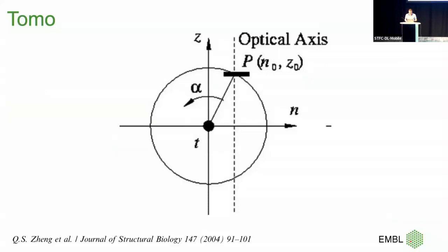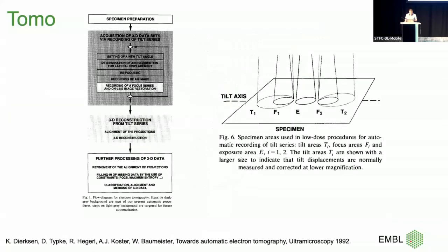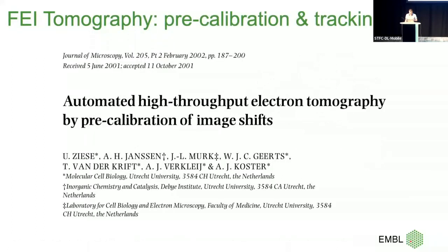The stage technology is about 30 years old. In the early days, you'd take an image somewhere, then along the tilt axis go next to it, do focusing, take a tracking image, take an image, tilt, and then do tracking and focusing again — very, very slow, but everybody accepted it. In 2000 I started at FEI, soon after FEI Tomography was launched, based on a method from Bram Koster's lab involving pre-calibration of image shift.